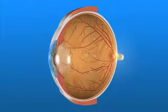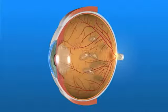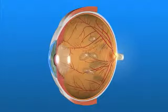Frequently, tiny clumps of cells form inside the gel-like vitreous. The shadows these clumps cast on the retina are what we perceive as floaters. They can appear as dots, circles, lines, clouds, or cobwebs in the field of vision. Floaters are more common as we reach middle age.